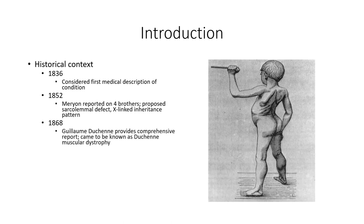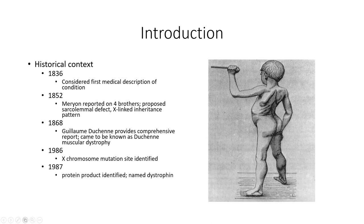The disease received its namesake from Guillaume Duchenne, a French neurologist who, between 1861 and 1868, detailed the disease extensively in studies of over a dozen patients. With advancement in the field of genetics, physicians correctly theorized that the sex-linked inheritance pattern meant the gene could be localized to the X chromosome. The site of the mutation was located in 1986, and the following year the gene product was identified and named dystrophin. Further research localized the protein to the muscle cell membrane, leading to characterization of the dystrophin-associated protein complex and other forms of muscular dystrophy related to mutations within the complex.